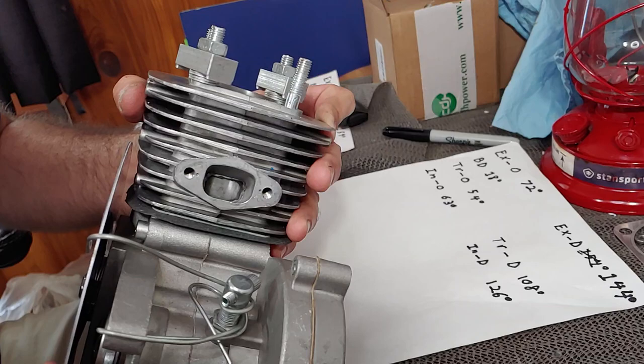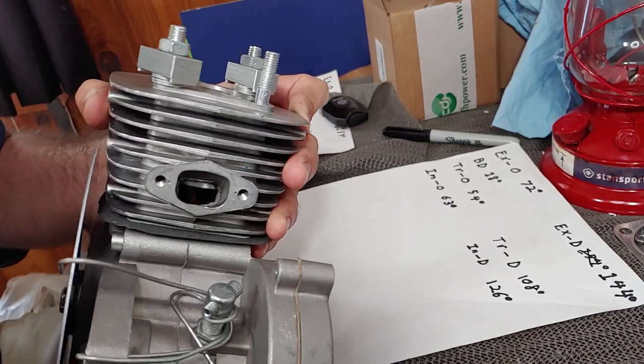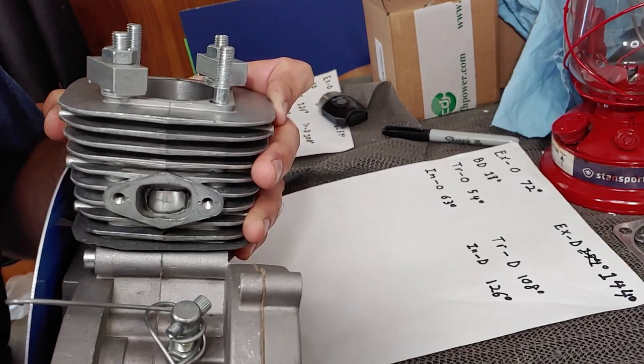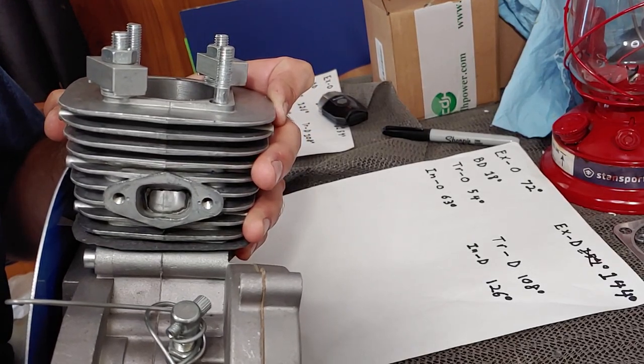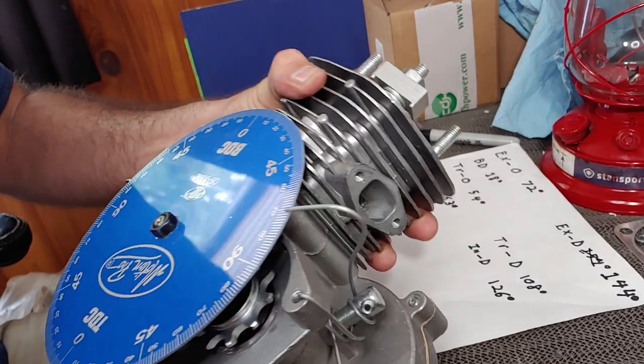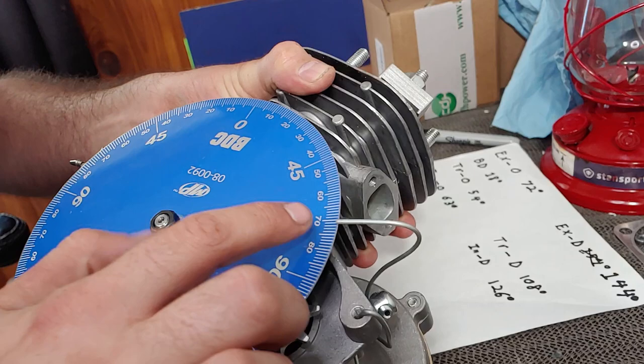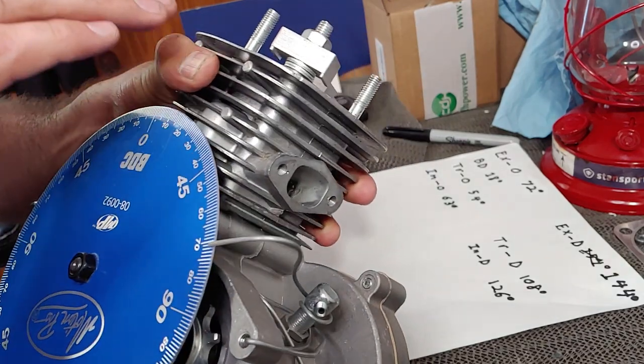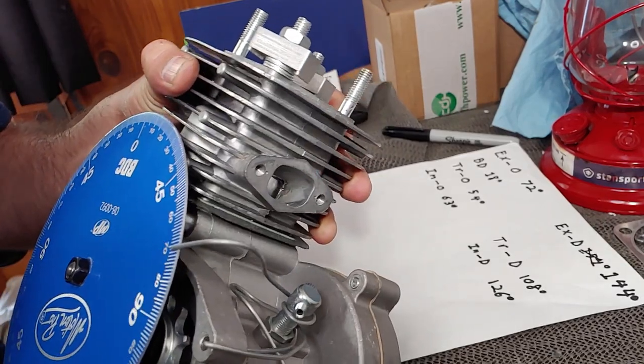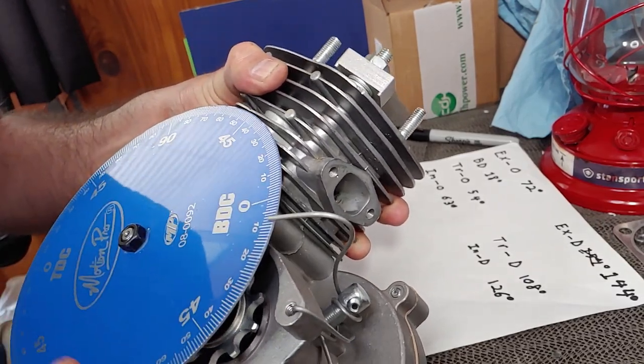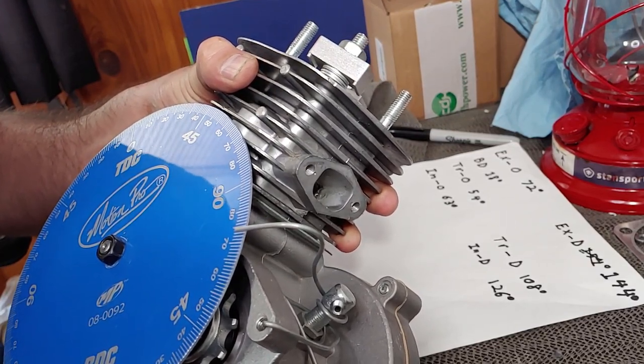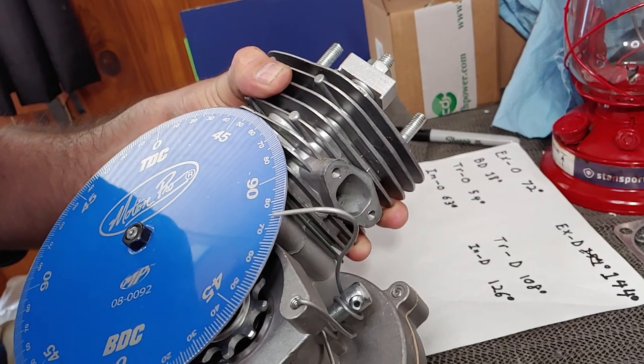So starting with our exhaust opening, she just peeks over the top, should be right at 72 degrees. There we go, yeah I got 72 degrees on the degree wheel where the top of the exhaust is just barely showing. Okay on the other side of the degree wheel at 72 degrees is where it closes and turns out it's that way for all the ports. I didn't realize that so that made it a lot harder in my brain.